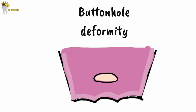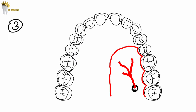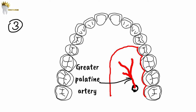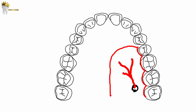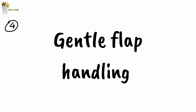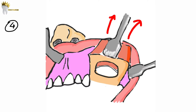What you see here is called a buttonhole deformity — when trauma to the flap occurs due to improper handling, blood supply to the part of the flap tissue away from the base is compromised. Whenever possible, we should try to keep the base of the flap towards a major blood supply — for example, in the palate the flap should be based towards the greater palatine artery. During the surgical procedure, excessive pulling, crushing, or folding of the flap must be avoided because it can compromise blood supply and delay healing.